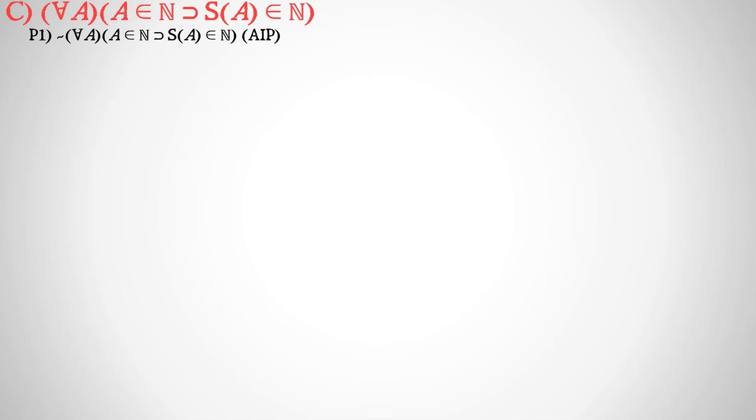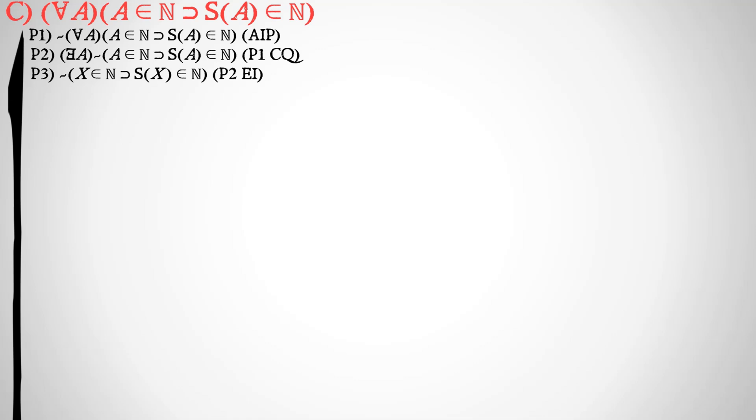This is our conclusion — this is what we're trying to prove. In order to prove it, we're going to do an assumed indirect proof, which means we are going to assume the negation of that statement and try to get to a contradiction. We'll draw a line going down, then do a change of quantifier to pull that negation inside our universal quantifier and change it to an existential quantifier — so there exists an A instead of for all A. Then we will existentially instantiate A to X.